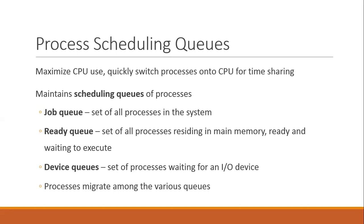The ready queue has all the processes which are residing in main memory, ready for execution and waiting for the processor to become available. As soon as the processor becomes available, they start their execution. Obviously there must be some mechanism to choose a process from the ready queue, since there are many available processes. The same applies to the job queue — there must be some mechanism to choose which process is shifted from the job queue to the ready queue, and similarly, which process from the ready queue is allocated the processor.